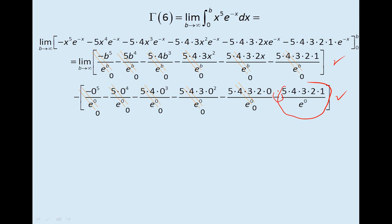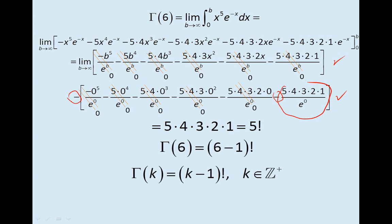Now, notice we have a negative here and a negative here. If we put those together, we're going to get a positive. Five times four times three times two times one. Of course, that's five factorial. Now, you could continue on with this, and what you would note is that whatever k you put in there, whatever positive integer, gamma of k is going to be k minus one quantity factorial, provided that k is a positive integer.